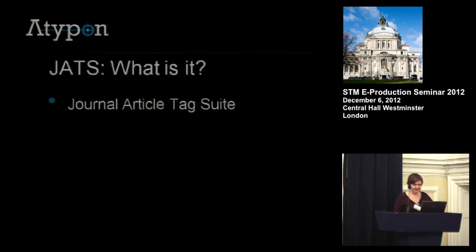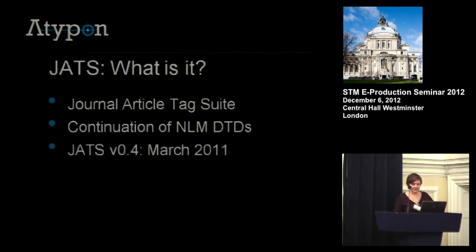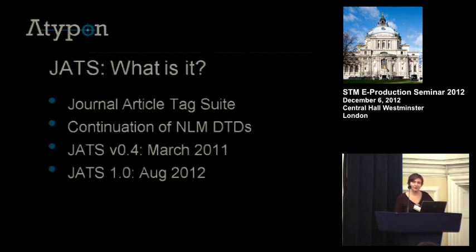What is JATS? JATS stands for Journal Article Tag Suite. It's a continuation of the NLM DTDs. The reason for the name change is that the decision was made to put the DTD, the tag set, under the NISO umbrella. So now the working group is working within the NISO framework, and it's no longer controlled by NLM. JATS version 0.4 was released in draft form in March of 2011 for public comments. And then over the summer, JATS 1.0 came out — the final version. It's now an official standard.